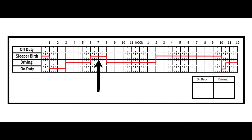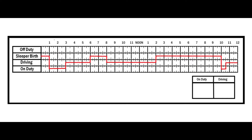Then you go into the sleeper berth and take either your two or three hour part of your break, then come out and drop back down to driving. You drive for six hours. When you go back up into the sleeper berth to take your seven or eight hour part of your break, you need to figure out how many hours you're going to have available when you come off that seven or eight hour sleeper berth period — that part has to be in the sleeper berth.